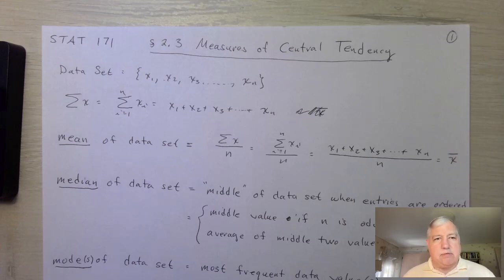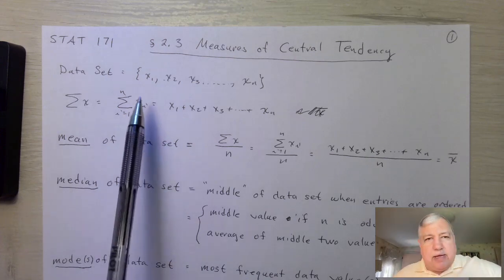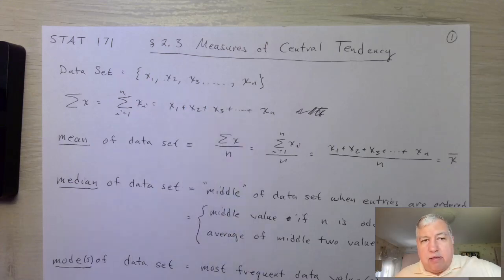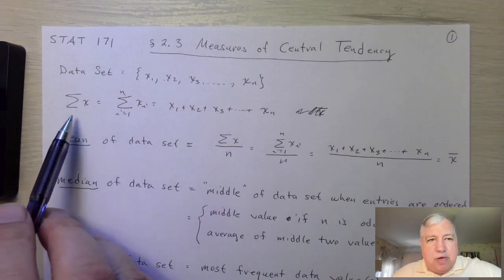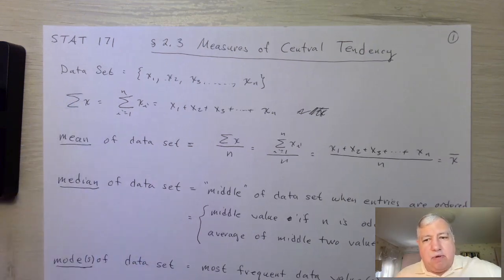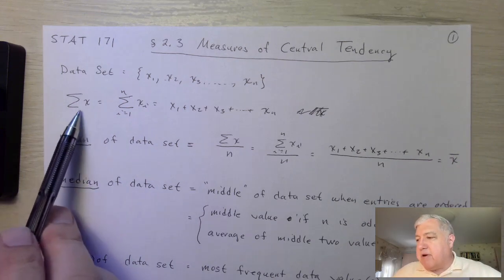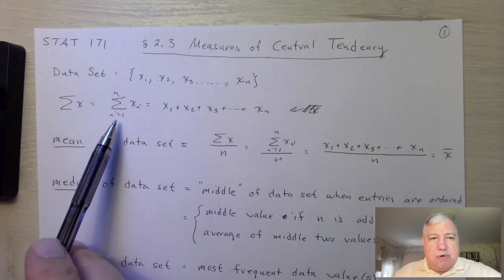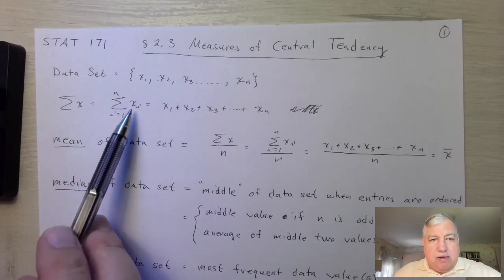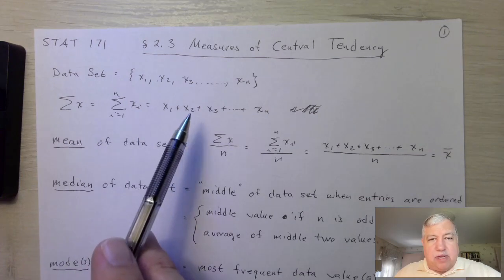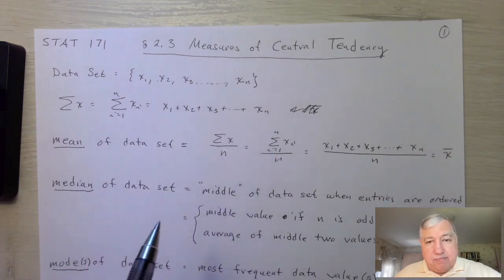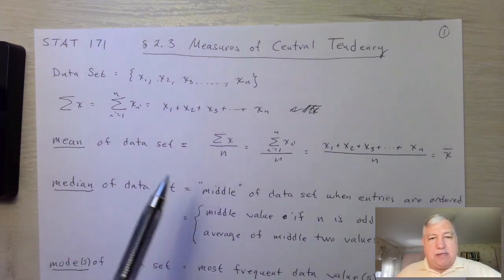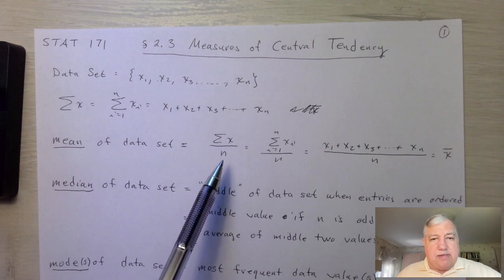The more technical term is mean. Here we're taking a finite data set, and if you're familiar with sigma notation, sigma is the Greek letter that mathematicians and statisticians use to denote sum. Sigma followed by x means you're taking the sum of all the data values in the set. With subscripts, sigma from i equals 1 to n of x sub i means we're adding x₁ plus x₂ plus x₃ all the way up to x sub n. The mean of the data set is this sum divided by the size of the data set, n.